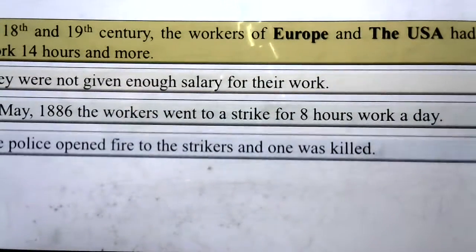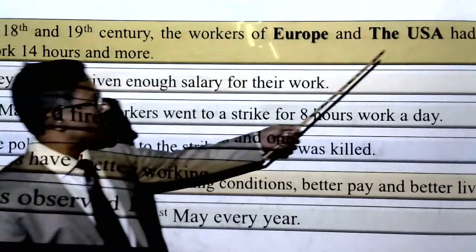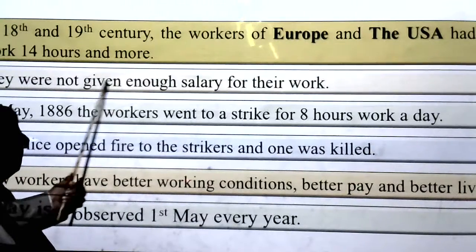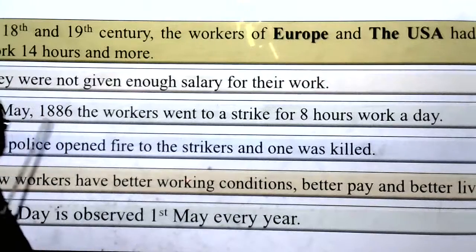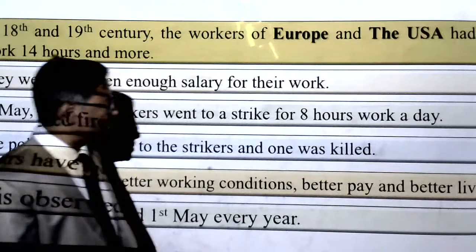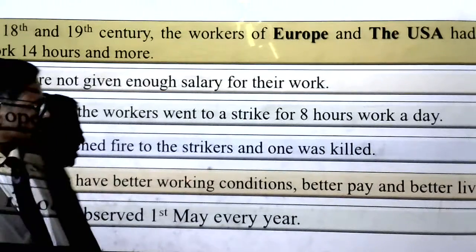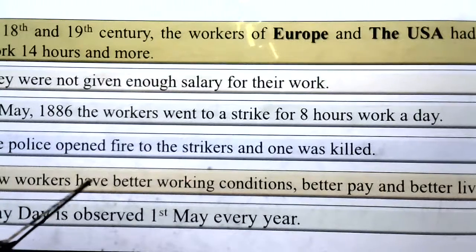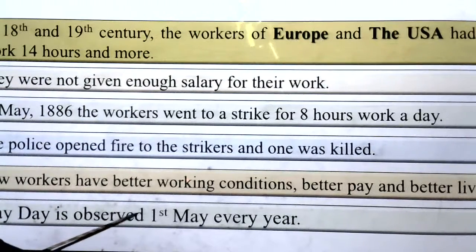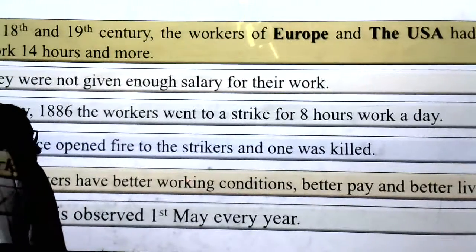May Day at a glance: In the 18th and 19th centuries, the workers of Europe and the USA had to work 14 hours and more and were not given enough salary for their work. On 1st May 1886, the workers went on strike for an 8-hour workday. The police opened fire on the strikers and one was killed. Now workers have better working conditions, better pay, and better lives. May Day is observed on 1st May every year all over the world, especially by UN member countries.